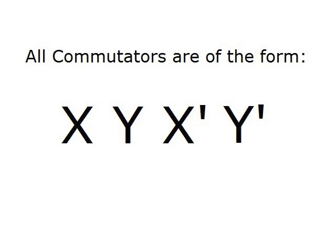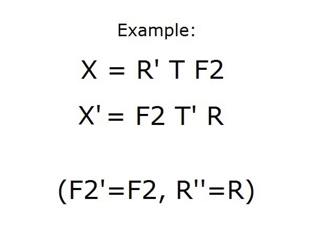The inverse of an algorithm is whatever algorithm is needed in order to undo whatever was just done. To find the inverse of an algorithm, write the algorithm backwards and then write a prime symbol after every element. For example, if x = R' T F2, then the inverse x' = F2 T' R. Notice that F2' = F2, and R'' = R.